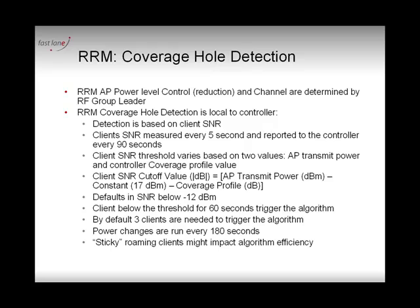Coverage hole detection is local to your controller in the sense that there is no group work on this feature. The reason why is because what you're trying to detect here is if one of your clients is getting out of range — something which only refers to your access points. If one of the clients is getting out of range, you may want to increase the power of one of your access points to maintain that client. This has nothing to do with the workgroup, so it's not controlled by the RF group, but just by the controller locally itself.